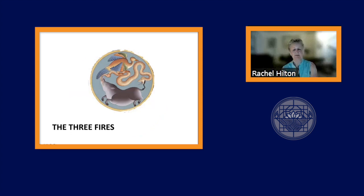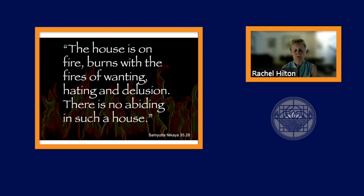Those are the three signs of being and the five skandhas. I'm now moving on to the second part of the talk about the three fires. You'll see here a little image of three animals chasing each other - a crow, a snake and a boar. Those represent the three fires. They're called the three fires or three passions, or sometimes the three poisons. The Buddha spoke of these in the fire sermon: the house, in other words we ourselves, the house is on fire. The house is burning with the fires of wanting, hating and delusion. There is no abiding in such a house. These passions, these fires drive us.